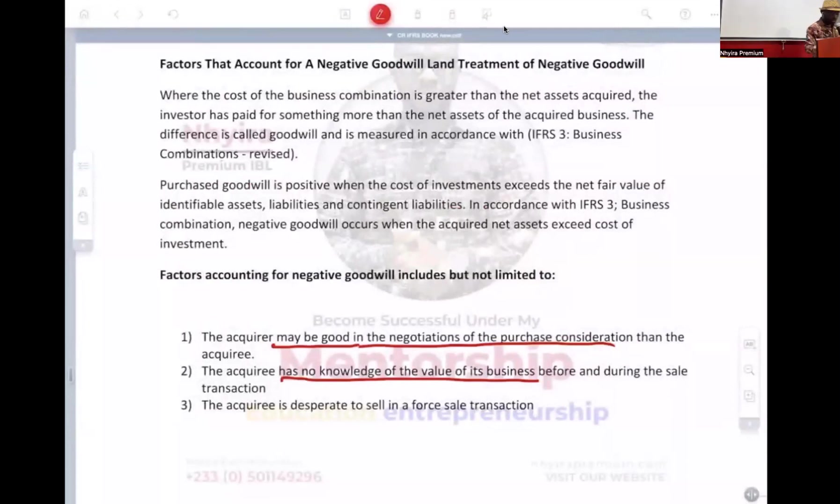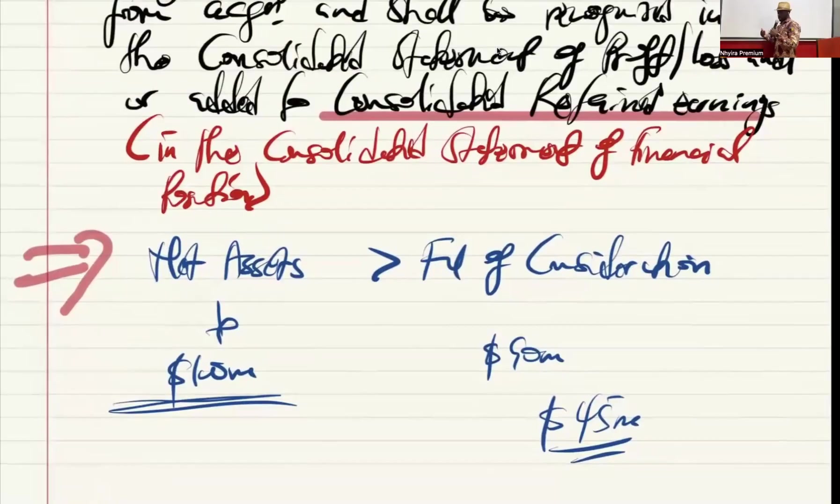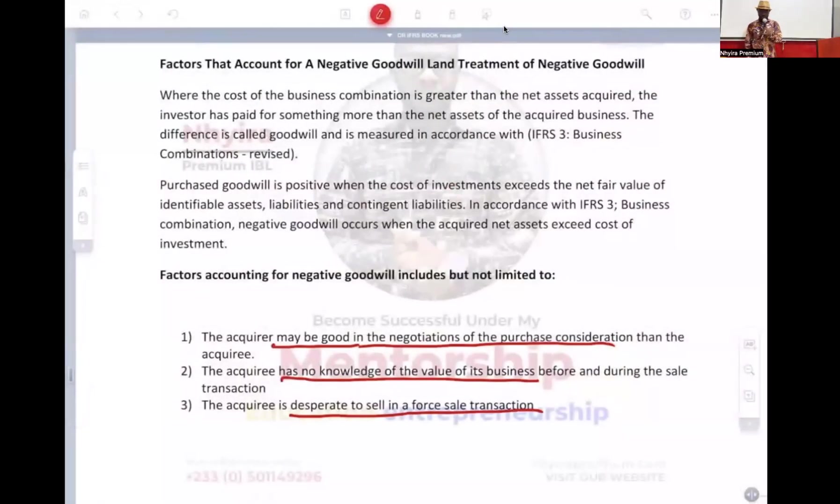Third, the acquirer is desperate to sell in a forced sale transaction. Desperation. Probably they need money to finance a family relative's surgery or they file for bankruptcy and so the court has declared that their assets must be sold and pay for the debt and all that. Under that circumstance, it's a forced sale. So when that happens, your family don't call me. Because it's being auctioned, literally. And so we're going to pay less than how much we are going to pay. And these are some of the reasons why goodwill can be negative.